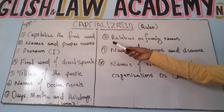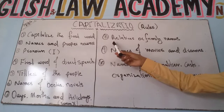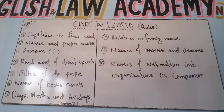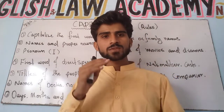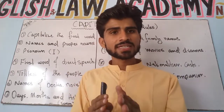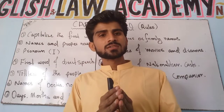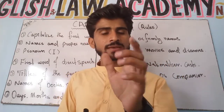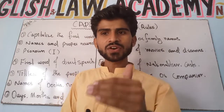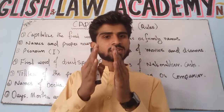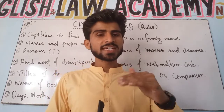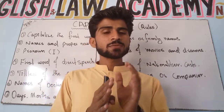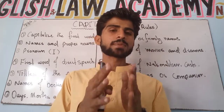Rule eight: relatives or family names. Whenever you write the names of relatives or family members, the first letter must be in capital form. For example, Father — the F must be capitalized. Similarly, Brother, Sister, and Mother — the first letter of each of these family titles must be in capital form.